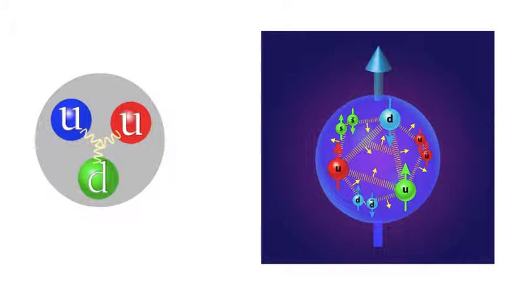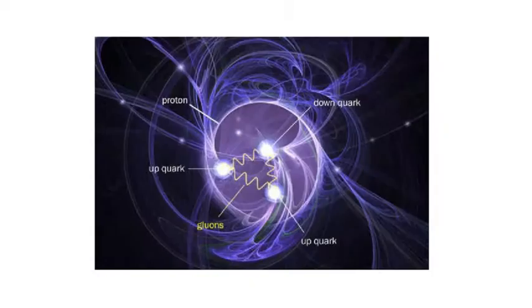The wavy-like string between the quarks represents the gluon, a massless subatomic particle that is responsible to bind, or glue, like its name suggests, the quarks together to form and stabilize the structure of the proton.